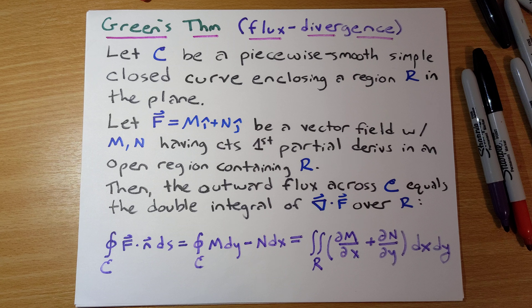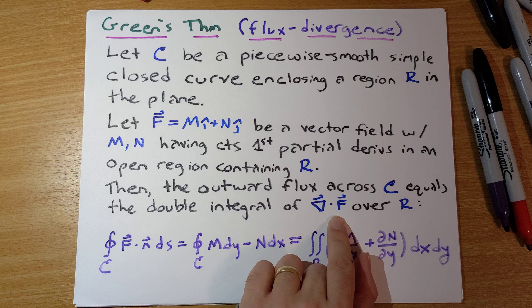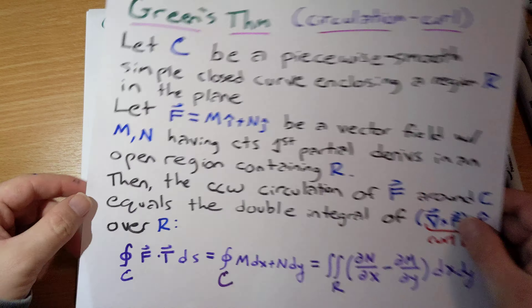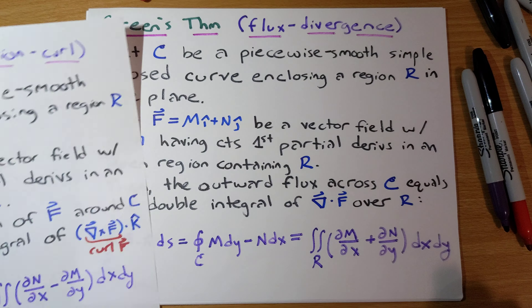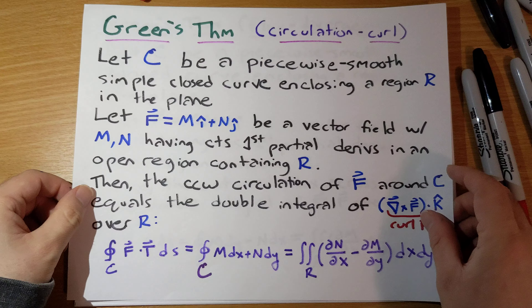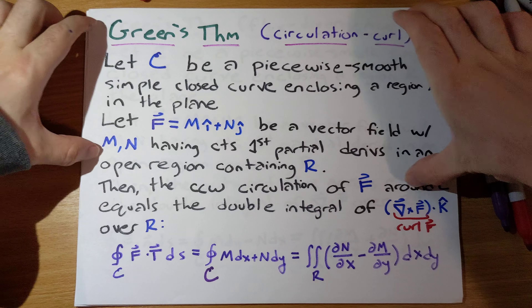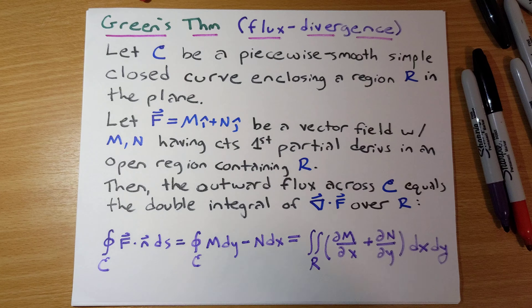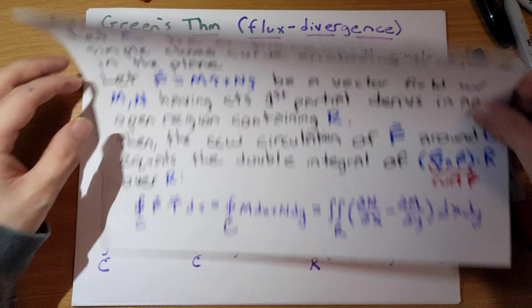Here is the second version of Green's Theorem, the flux-divergence form of Green's Theorem, a little bit less commonly known than the first version. Let C be a piecewise smooth simple closed curve enclosing region R in the plane, let F equal M i-hat plus N j-hat be a vector field with continuous first partial derivatives. Then the outward flux across C equals the double integral of the divergence of F over R.